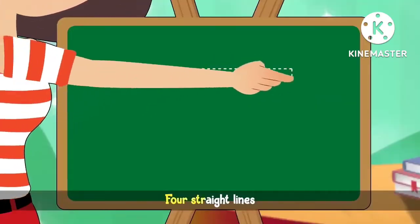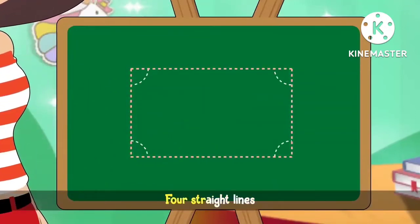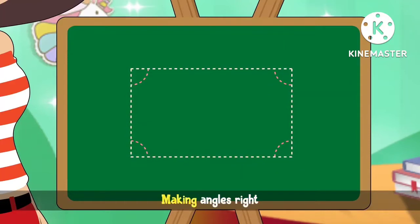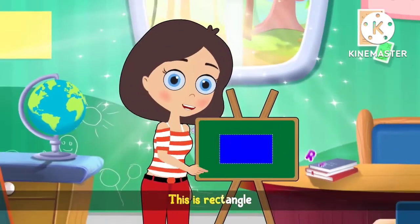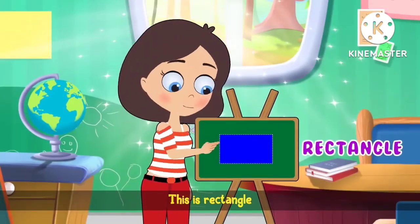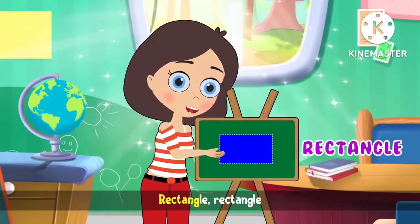Four straight lines making angles right. Four straight lines making angles right. Two are big, two are small. This is rectangle, this is rectangle, rectangle, rectangle.